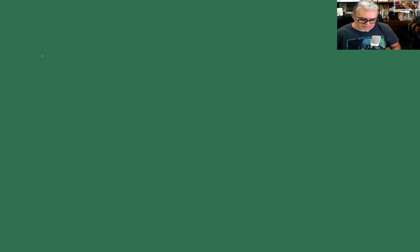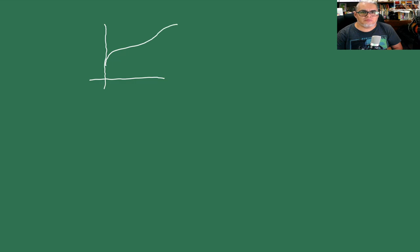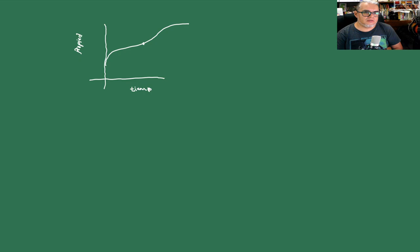Entonces, ¿de qué estamos hablando? Imaginen que tenemos aquí la gráfica de una función continua y nos vamos a fijar en un punto. Supongamos que esto mide algún proceso de crecimiento o de cambio. Aquí tenemos el tiempo, y por acá vamos a tener alguna propiedad que es función del tiempo — una propiedad de T.